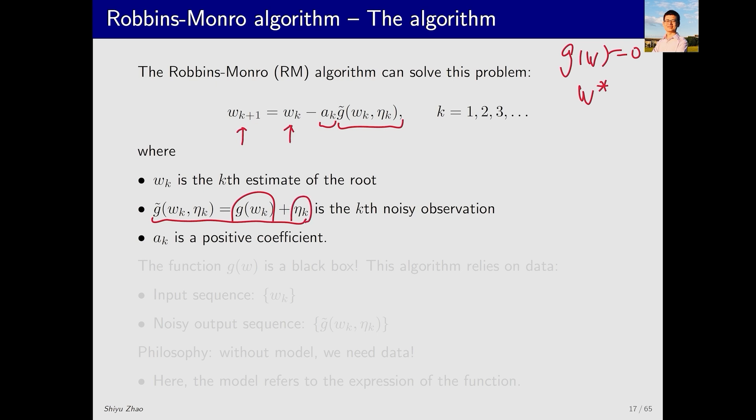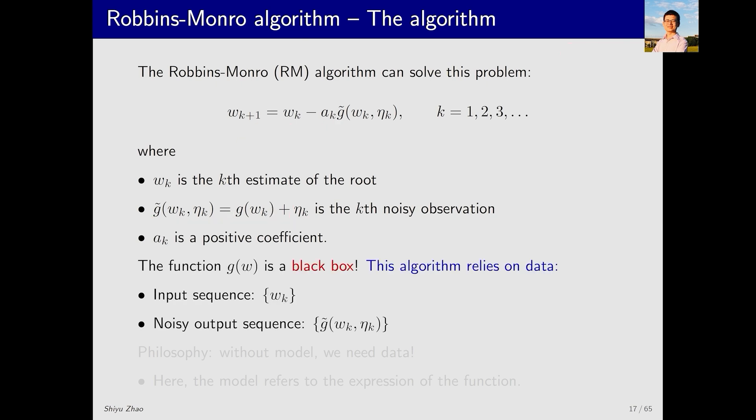So, what is g tilde? It is a noisy observation of g. In this algorithm, we treat the function g(w) as a black box. We do not know its expression. The algorithm requires the information of the sequence of inputs wk and the sequence of noisy output g tilde. Let's illustrate this with a diagram. There is a black box representing g(w). When we input w, it outputs y. However, we cannot accurately measure y. There is noise, the value of which is unknown. What we can measure is g tilde.